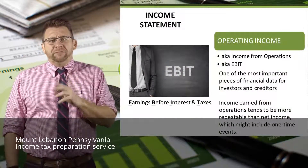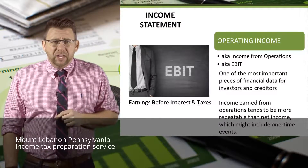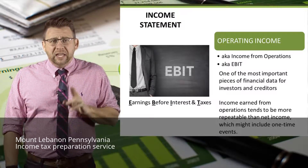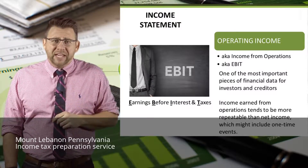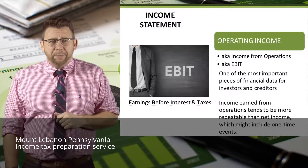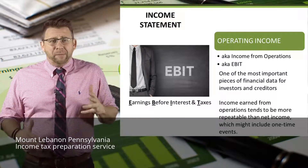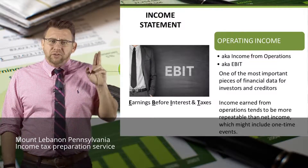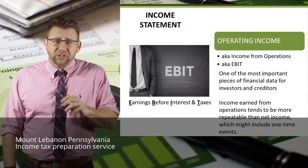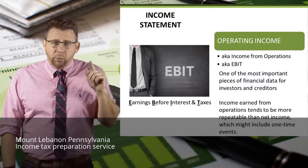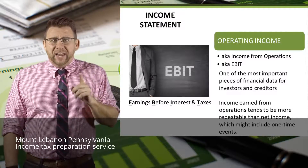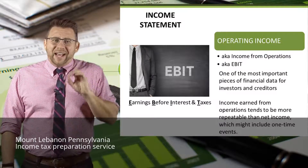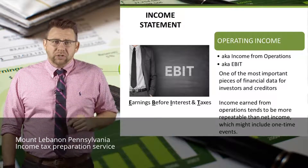Operating income has a few different names that you might hear from time to time. It is also known as income from operations or EBIT, which stands for earnings before interest and taxes. When we look back at the multi-step income statement, you'll see that about the only things that remain are interest and taxes. Operating income is one of the most important pieces of financial data for investors and creditors because it tends to be more repeatable than net income, which may include some one-time events. Therefore, it has a higher predictive value, and that is important to investors.